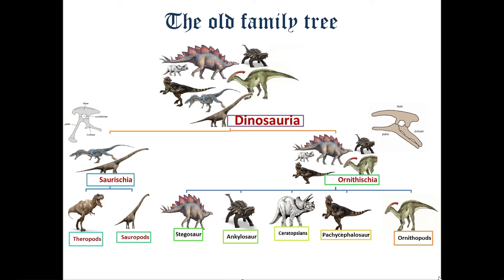The common ancestor was bipedal, and many varieties of dinosaurs that we see adapted to quadrupedism are actually secondary quadrupeds. That means a quadruped animal became biped and then evolved back to quadruped. This kind is called secondary quadrupedism.